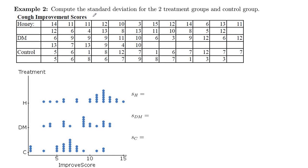So here in example two, we want to compute the standard deviation for the two treatment groups and the control group. This is the honey as a cough suppressant. These are the improvement scores for the honey group, for the DM group, and for the control group. And then these are the dot plots.